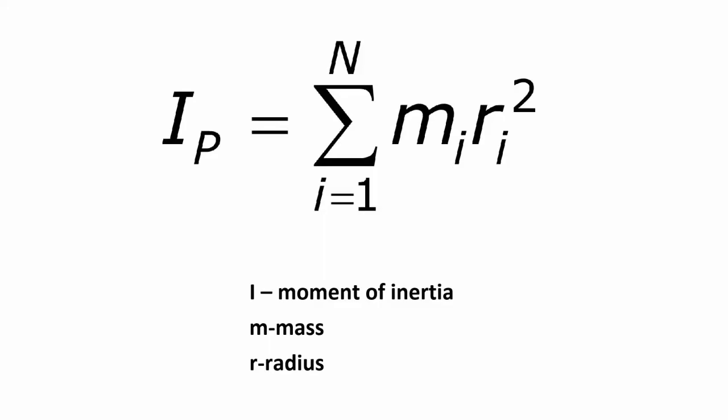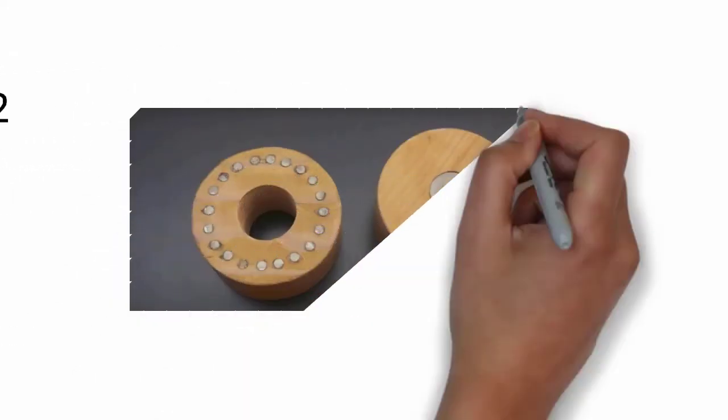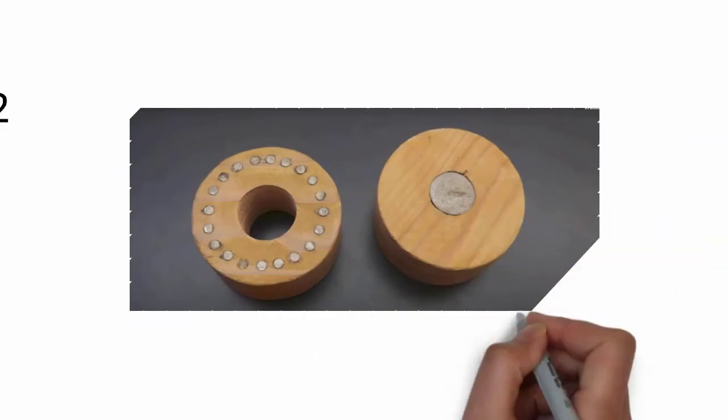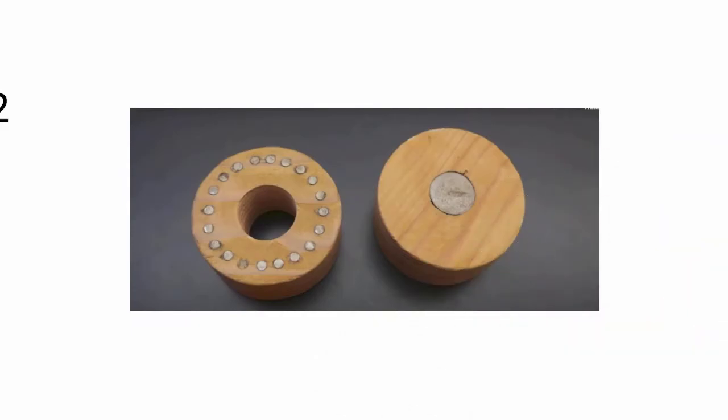Now we know the science behind the objects we saw before right? For an object to win it should have a little mass and most importantly its mass should be near to the center.